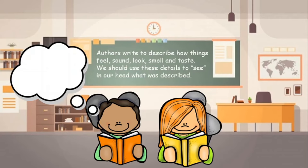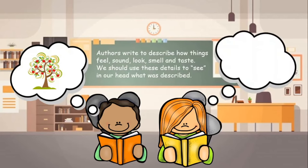Let's say you're reading a book and it's describing a tree that has big green leaves and really big red apples. You might imagine something like this. And then later, you might be reading about how they took those apples and made an apple pie. But the apple pie was too hot to eat and it was just driving you crazy to have to wait because it smelled so good. If you could, you might imagine something like this.